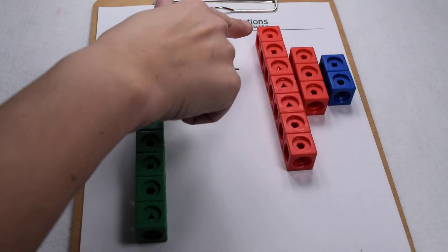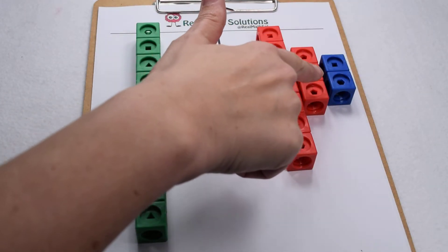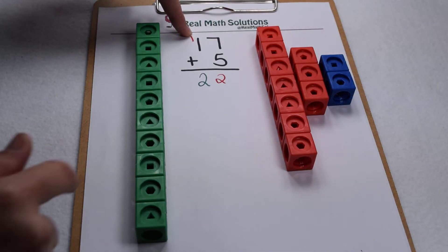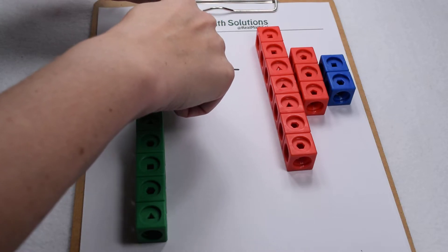Well, now over here in the ones place we have 7, 8, 9, 10, 11, and 12. Well, this carried 1 comes from 7 plus 5 gives me 12, carry my 1.